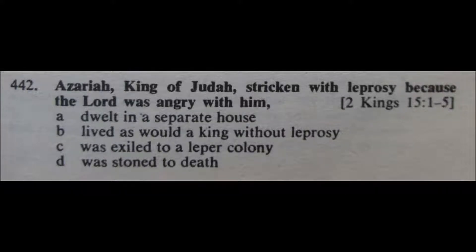Question 442: Azariah, king of Judah, stricken with leprosy because the Lord was angry with him — A. Dwelt in a separate house, B. Lived as would a king without leprosy, C. Was exiled to a leper colony, or D. Was stoned to death. I'm going to eliminate D and B. So it's between A and C, and I'm going to go for A for 442 — dwelt in a separate house.